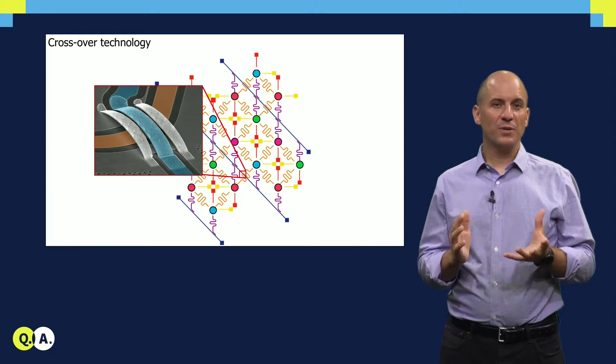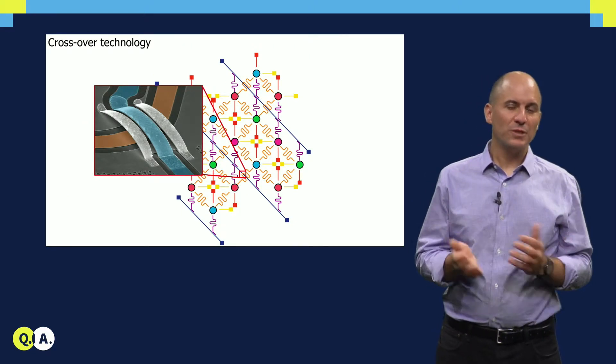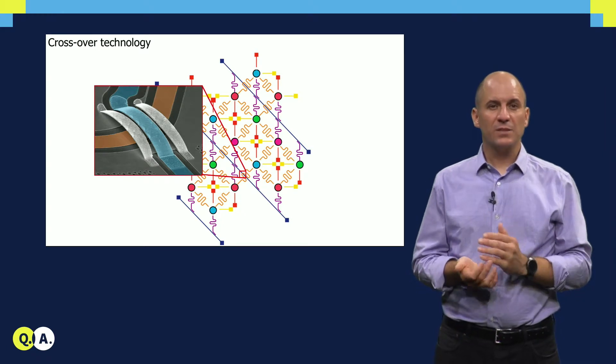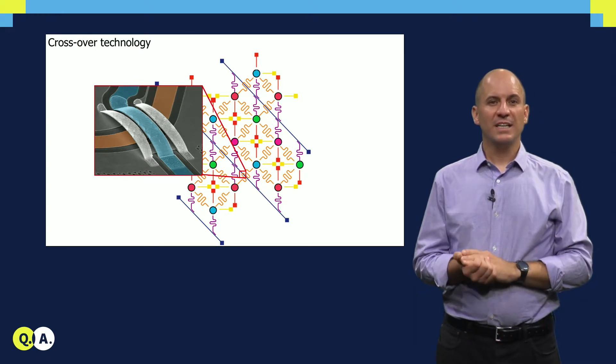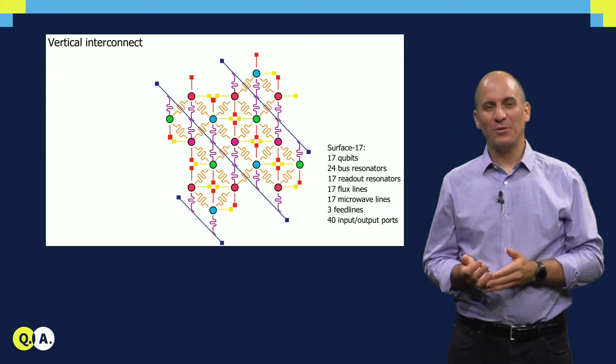You may have already noticed the crossing of transmission lines on the chip, which is not possible in a truly planar structure. For this, we make use of the third dimension in the form of air bridge crossovers. Cool stuff, isn't it? Beautiful.